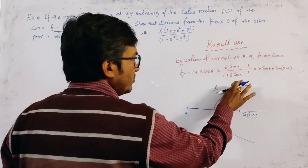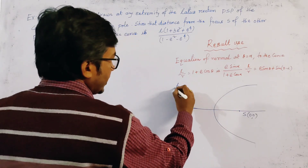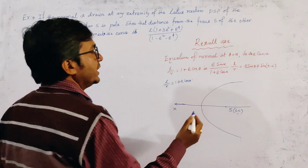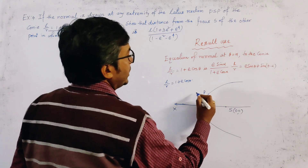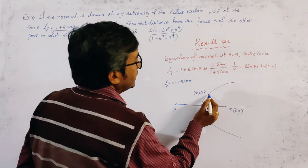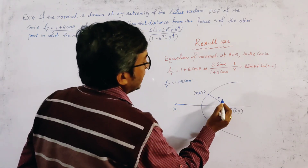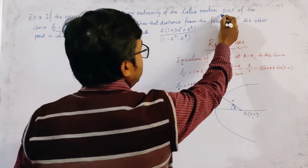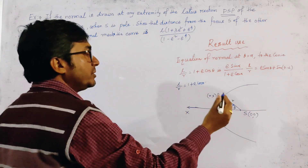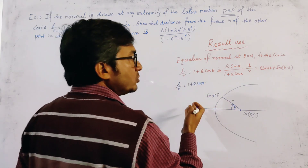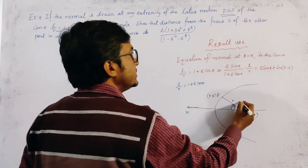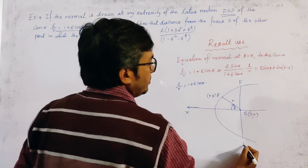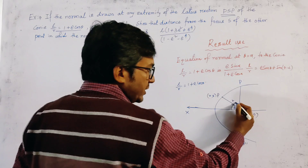Because the conic is of the form L/R = 1 + E cos θ, for any point P on the conic, the coordinates are (R, θ), where R is the distance and θ is the angle. The latus rectum is given by drawing a perpendicular to the initial line — that is the axis of the conic — through S. This is called the latus rectum, given by P and P', and the angle is π/2.